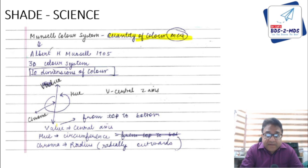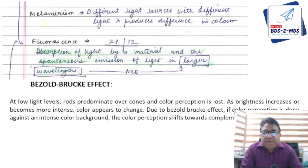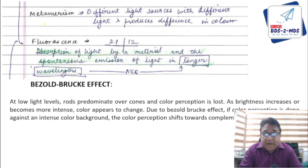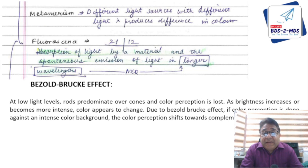Metamerism: when you see an object under two different light sources, because of their different wavelengths it produces different colors — that is metamerism. For example, a yellow ball will look different in yellow light versus white light. Fluorescence is the absorption of light by a material and spontaneous emission of light at a longer wavelength.